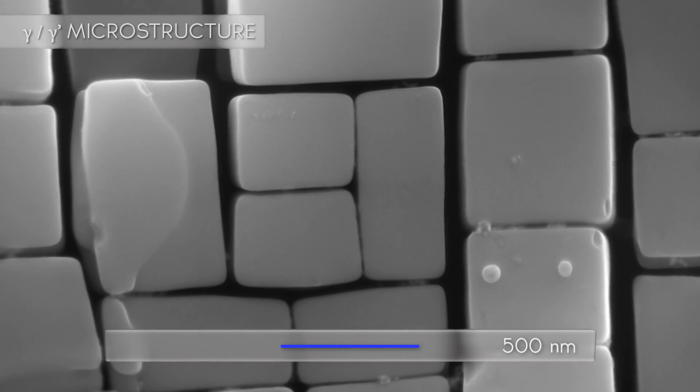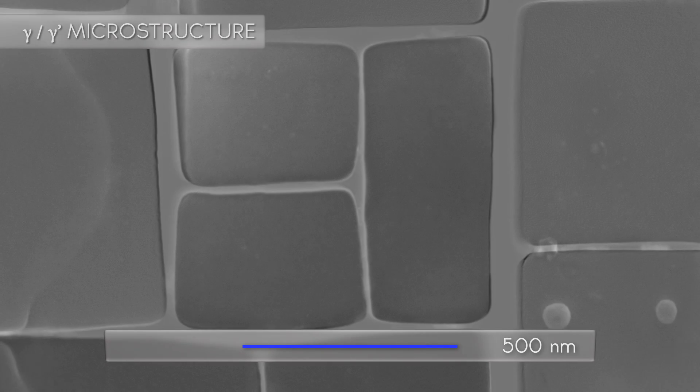The gamma prime particles are separated by thin gamma channels. This second phase in our microstructure is the gamma phase, a cubic face centered solid solution.